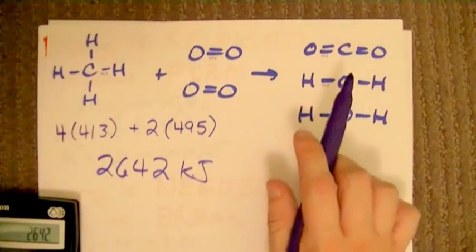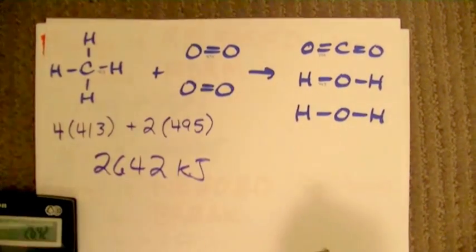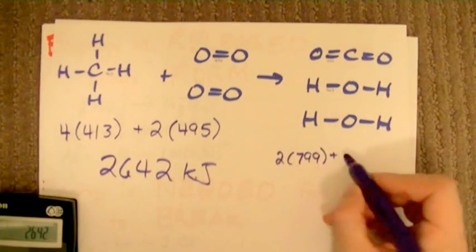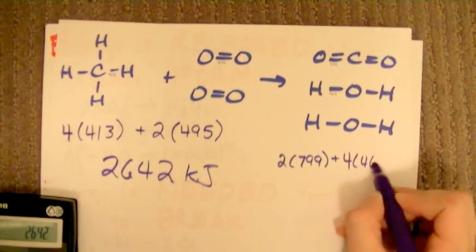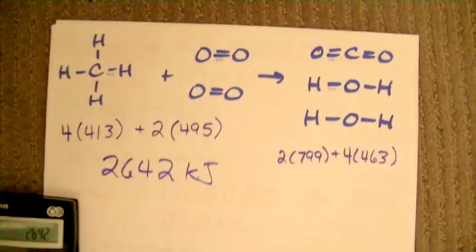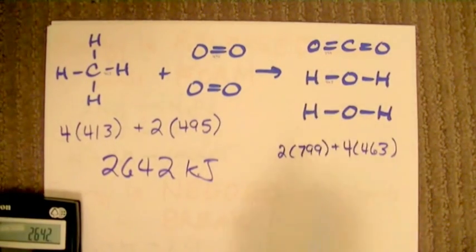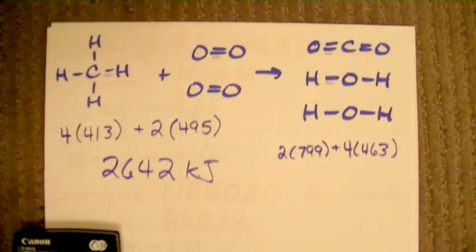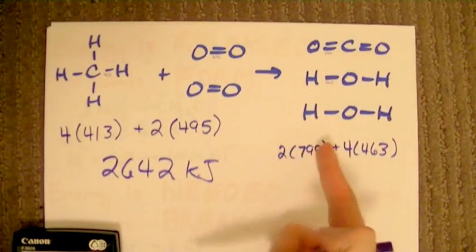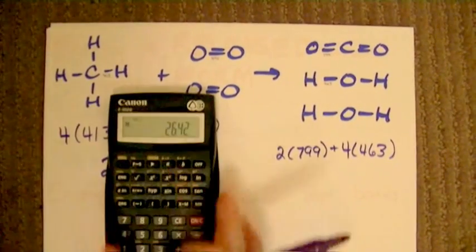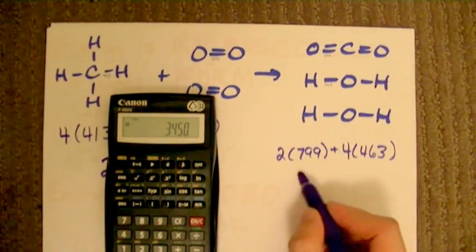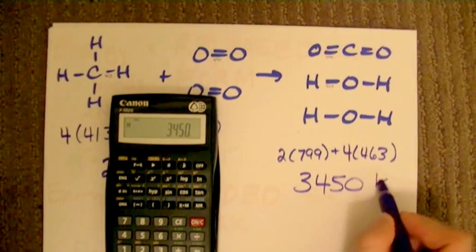On the product side, I have 2 C=O double bonds in CO2, each requiring 799 kilojoules to break — and that same value is the energy released when those bonds form. I also have 4 O-H single bonds in the two water molecules, each worth 463 kilojoules. So the energy released when we form all the product bonds is 2 times 799 plus 4 times 463, which equals 3,450 kilojoules.